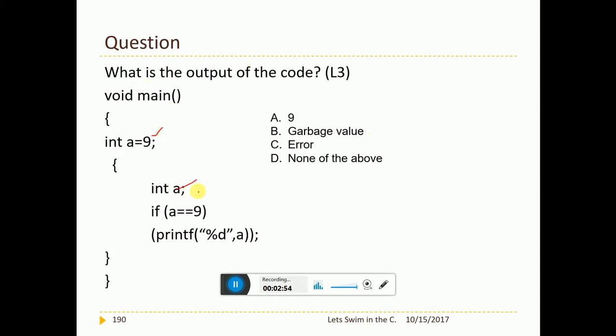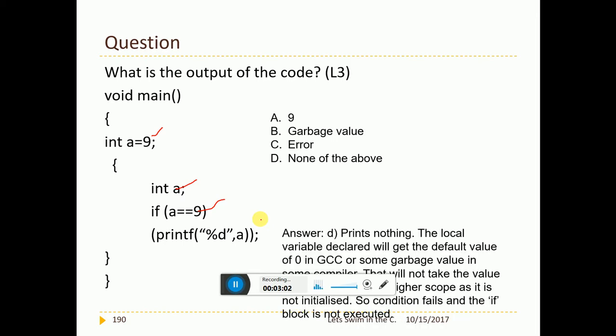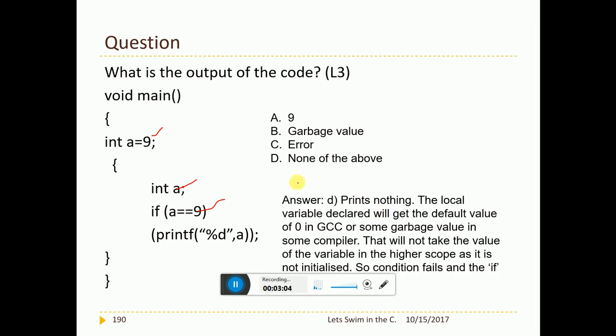Now, int a equal to 9, int a, if a equal to equal to 9, I am having inner bracket printf percentage d a. It is very simple again. See, I have got a here and this a is local and whenever I have some value without initialization, the modern compilers will have 0 assigned to it or at times some garbage may go into it. So, in that case, both of them will not be equaling to the value that we are checking for. Hence, it will have nothing done. Hence, none of the above is the answer, it won't print anything.